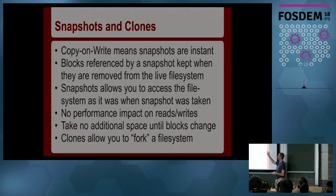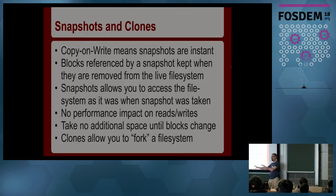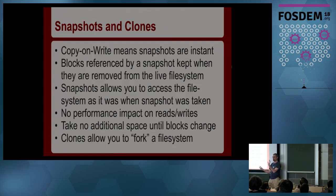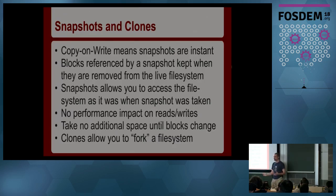A lot of what we'll cover is based on snapshots and clones. Because all data is copy-on-write — meaning instead of overwriting a file when it's modified, new space is allocated, the new version is written, and then the index is updated — if nothing else uses the old version, it becomes free space. But if you've taken a snapshot before you made the change, the old version is kept. Any blocks that are the same between the two file systems are shared; blocks are referenced by a snapshot and become free space only when there are zero references left.